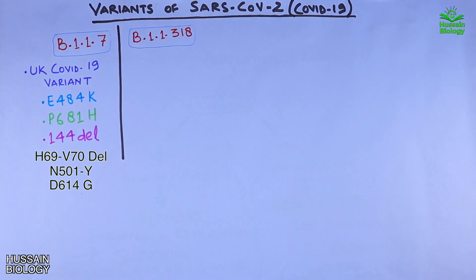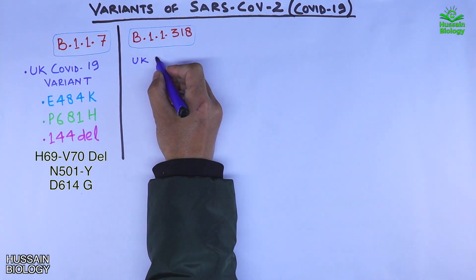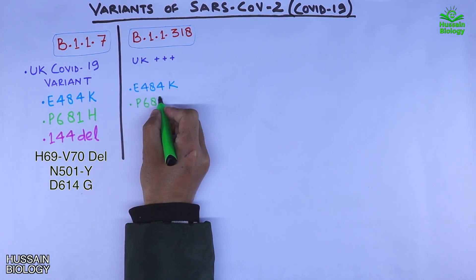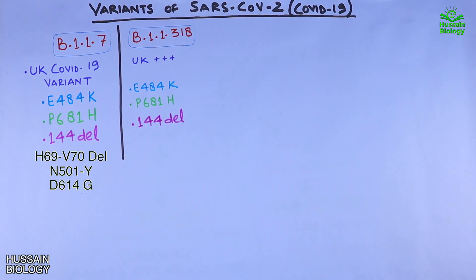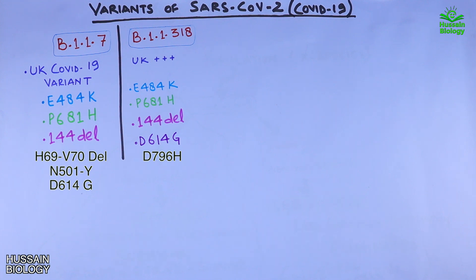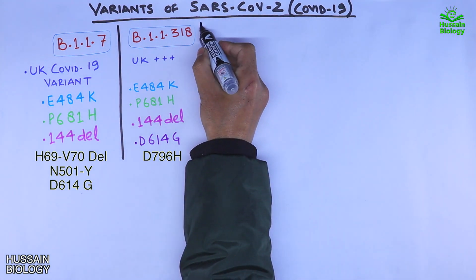The B.1.1.318 variant has the same important mutations in the spike protein as B.1.1.7: E484K, P681H, Y144 deletion, and D614G. Furthermore, it has one additional important mutation, D796H, which is an adaptive mutation that helps escape some convalescent plasma antibodies. It also has a 69/70 deletion in the spike protein that compensates for some loss of fitness caused by the D796H mutation.